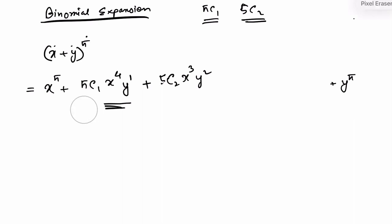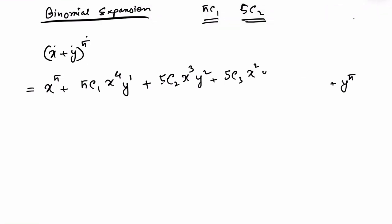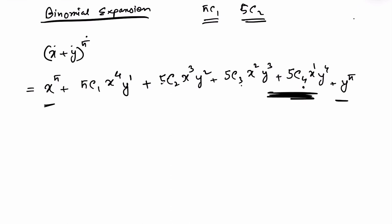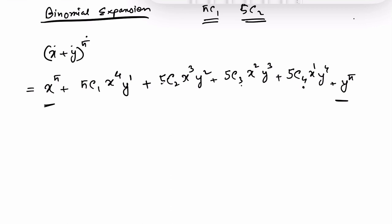Continuing the pattern: 5c3 gives x squared times y cubed, and 5c4 gives x to the power 1 times y to the power 4. Once you reach x to the power 1, you stop the pattern. The last term, y to the power 5, was already placed at the start, so you don't need to apply the c format for it.